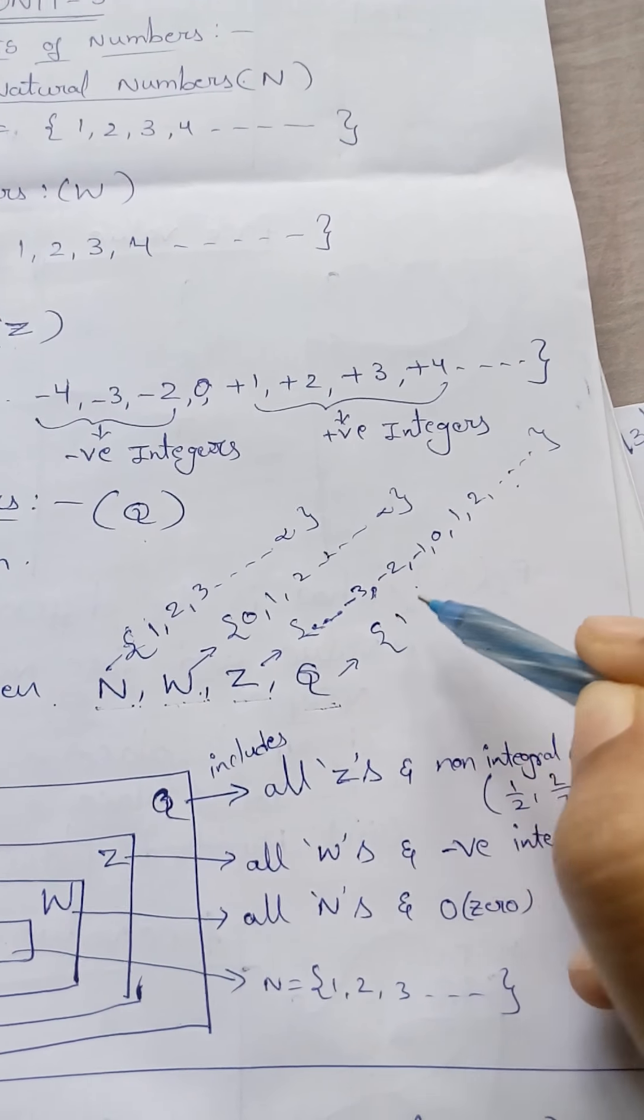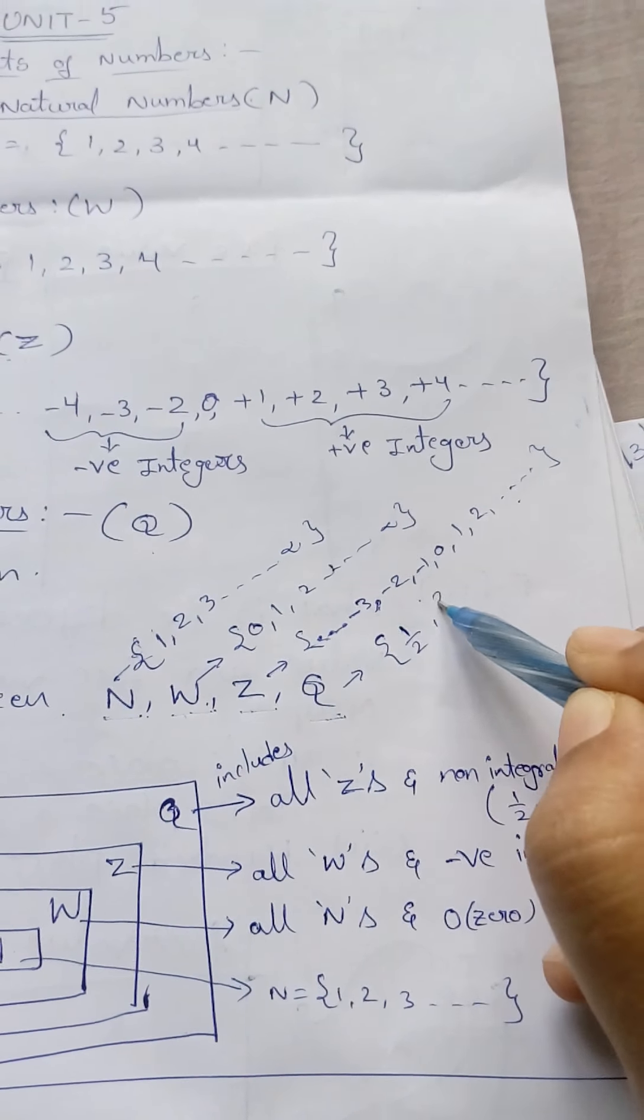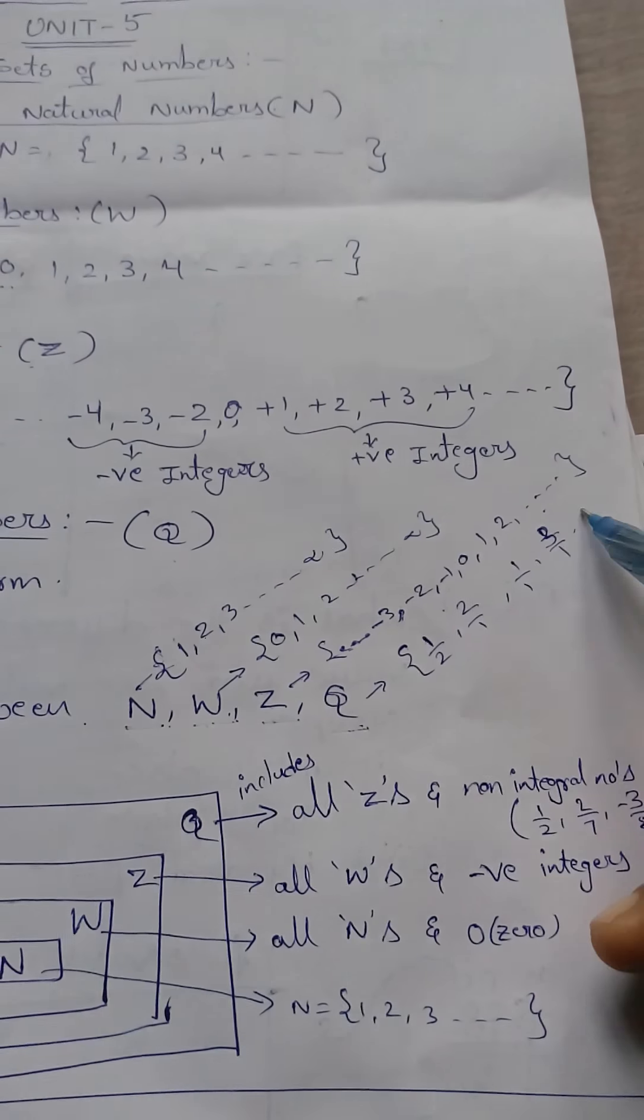Whereas Q means rational number. Every number is in the P by Q form. I can say any number we can take, it will be like 2 by 1, whatever it is.